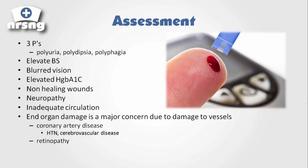For assessment, think of the three P's of diabetic assessment: polyuria, polydipsia, and polyphagia — tons of urine, tons of thirst, and tons of hunger. Those are the three classic findings we'll see with these patients. We're also going to see elevated blood sugar and blurred vision, which is due to retinopathy.